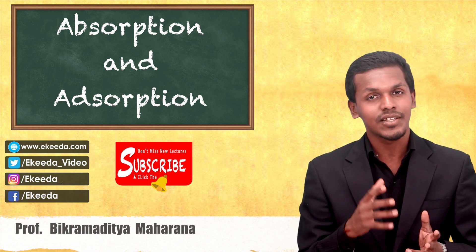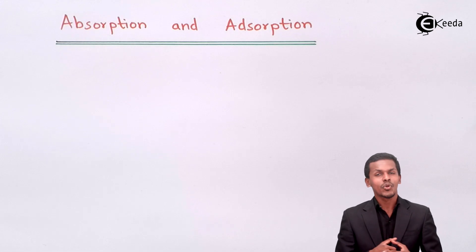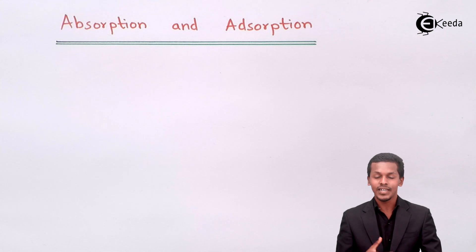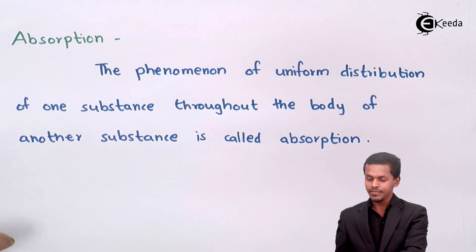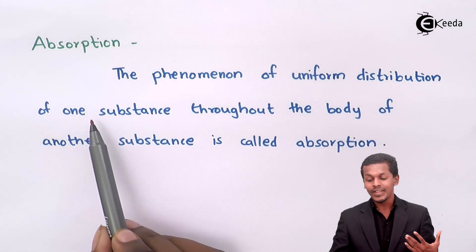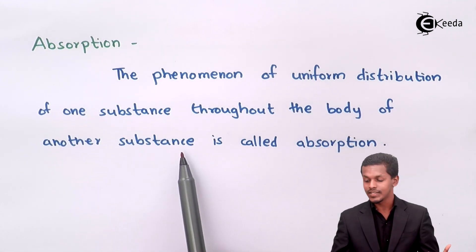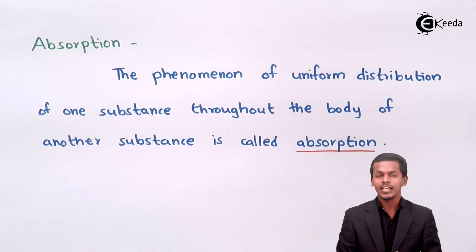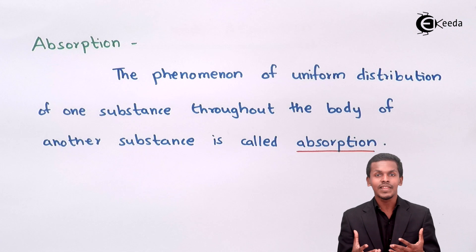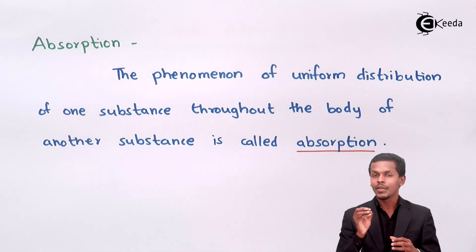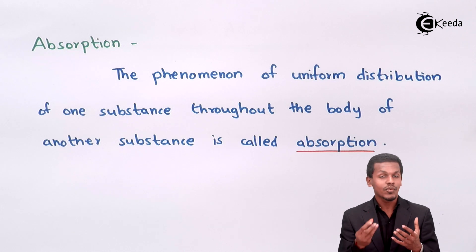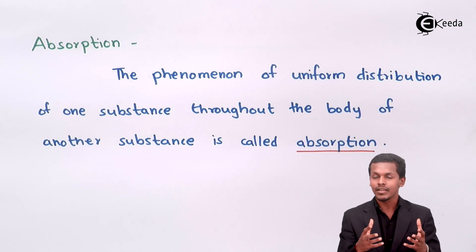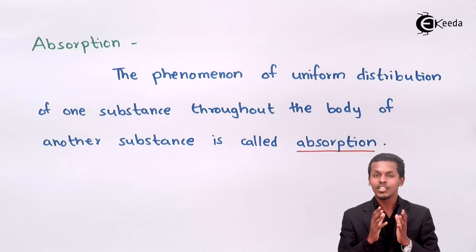The phenomenon of uniform distribution of one substance throughout the body of another substance is called absorption. For example, a sponge is dipped in water — the water enters the sponge and the water particles are equally distributed throughout the whole bulk. That is why it is called absorption.